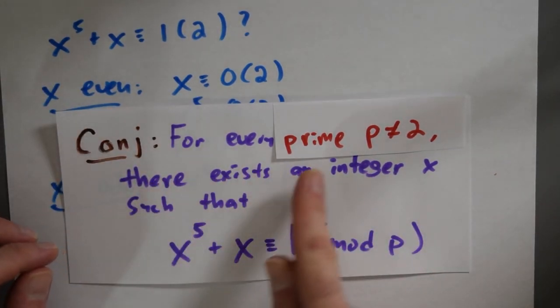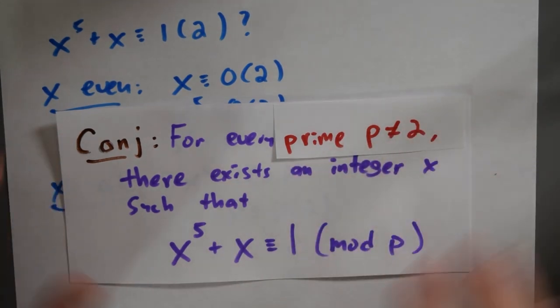Maybe this is a true conjecture. Is it the case that for every prime P not two, because we know that one doesn't work, but for every prime P not two, there exists an integer X so that X to the fifth plus X is one modulo P? I mean, that's a question. And that's a question for you, right? Is our salvage conjecture even true? That's for you to figure out.